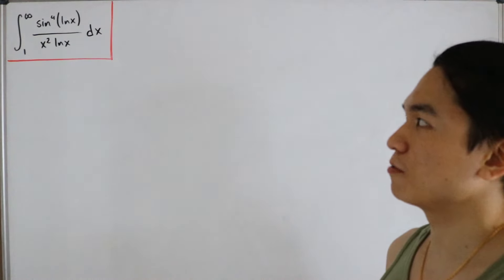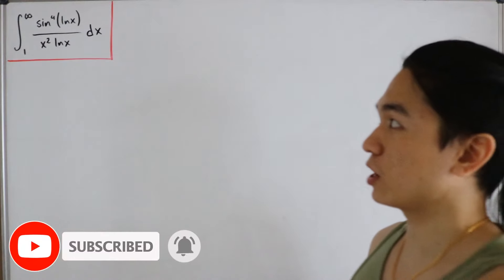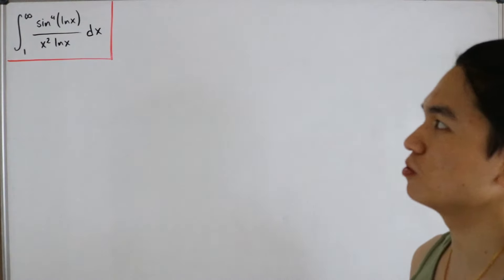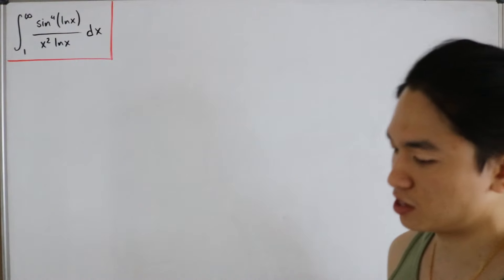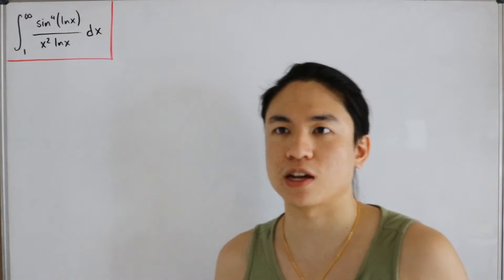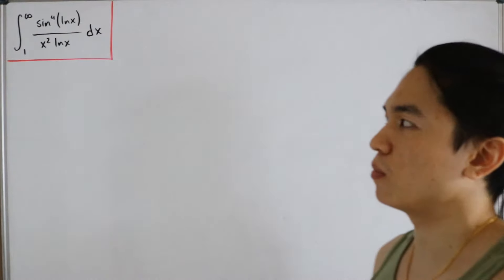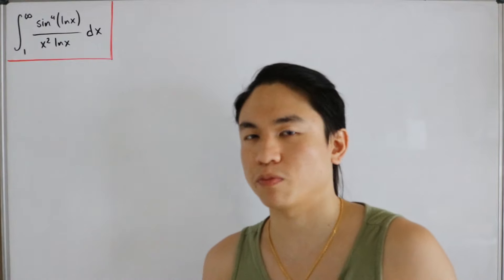Welcome back to another video. Today we have an integral involving natural logs, a trigonometric function, and a quadratic polynomial all in a single integrand. We have the integral from one to infinity of sine to the fourth of ln(x), divided by x² · ln(x), dx.